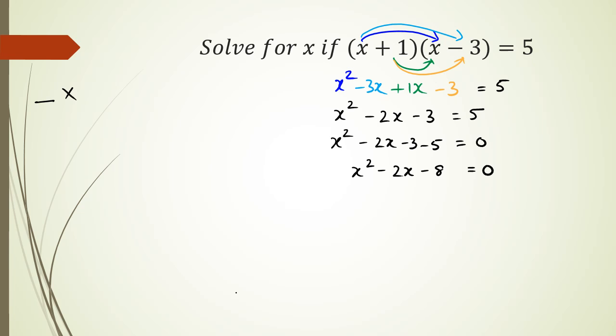So I'm basically looking for two numbers that multiply to 8 and add up to negative 2. So that's going to be negative 4 and positive 2, negative 4 and positive 2. So I have x minus 4, x plus 2 equals 0. And from here, I can see that either this is equal to 0 or this is equal to 0.